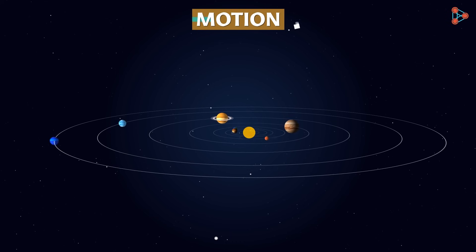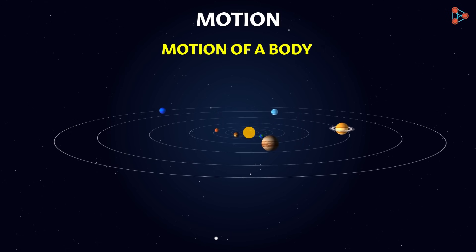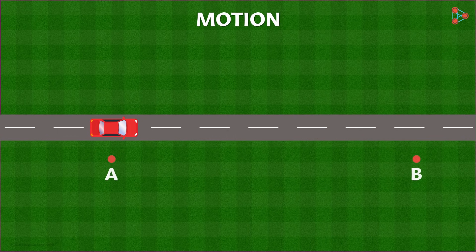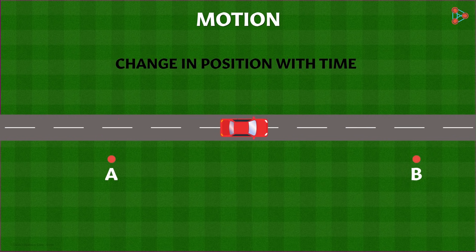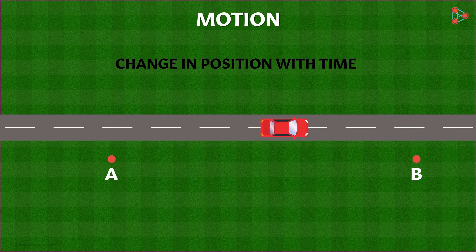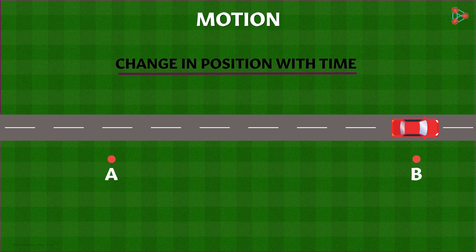But what if I ask you to tell me the definition of motion? How can we define something as intuitive as motion of a body? Well, for that, we need to look at what exactly happens to a body when it's in motion. Let's say this vehicle moves from point A to point B. You see that as it's moving towards B, its position in space changes with time. The change in position of a body with time is what we call motion. Whenever there's a change in position of a body, we say it's either undergoing motion or has undergone motion.